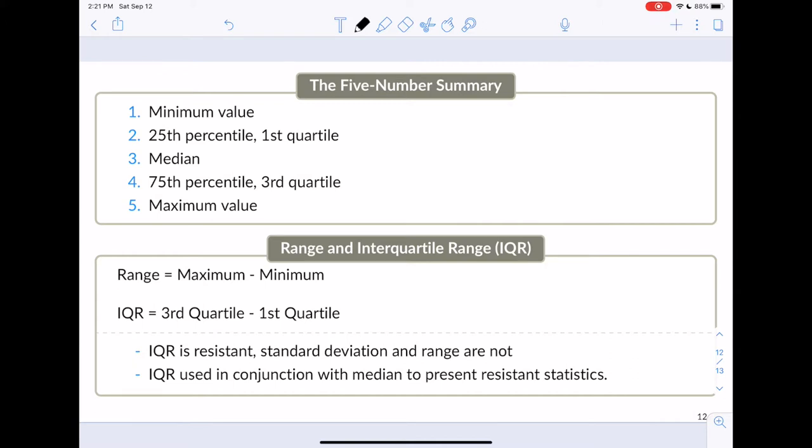The 75th percentile, also known as the third quartile, that is going to tell us that 75% of the data is below it, which means 25% is above it. And the maximum value.